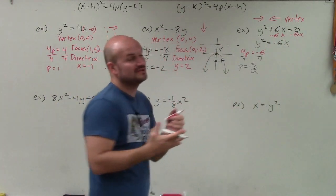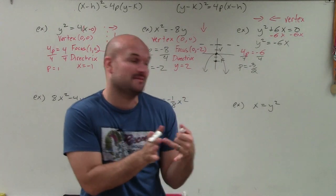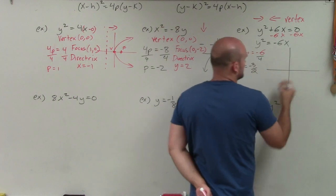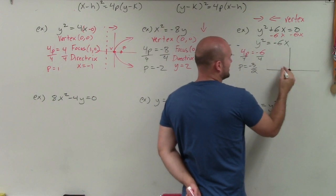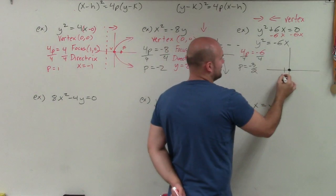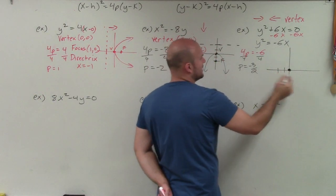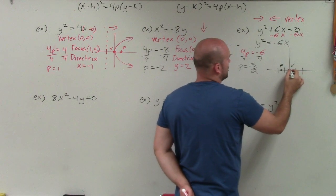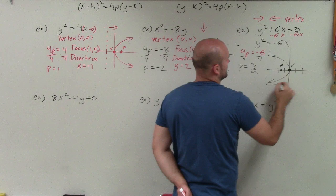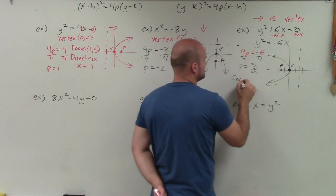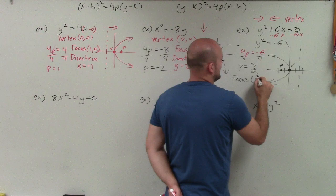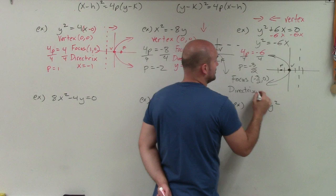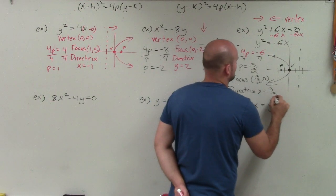Since p is negative, the graph opens to the left. The focus is at (−3/2, 0) — between negative 1 and negative 2. My directrix is perpendicular and vertical since the graph opens left. So the focus is (−3/2, 0), and the directrix is x = 3/2.